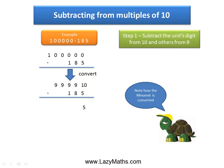9 minus 8 is 1. 9 minus 1 is 8. And then simply the 9 and the 9 come down as they are.